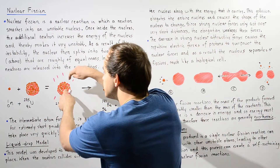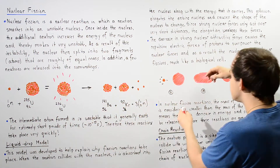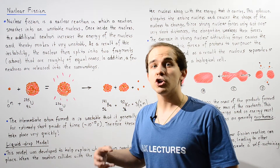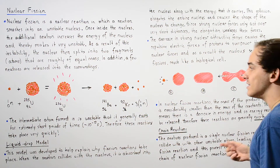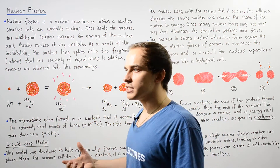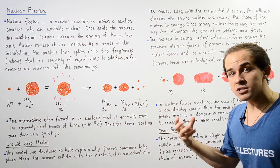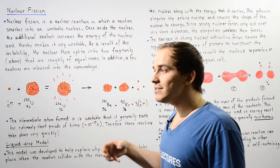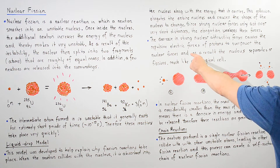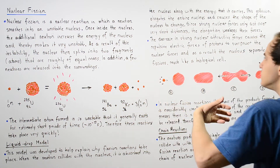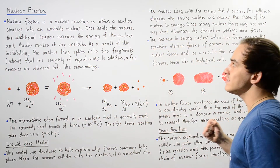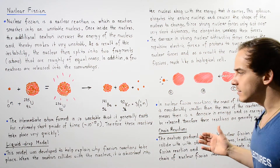as the distances between nucleons increase due to this elongation process — as shown in diagram B — there is a decrease in the strong nuclear attractive forces holding those nucleons in place. As a result of this decrease in attractive forces, the electrical repulsive forces between the protons increase and overpower the strong nuclear forces, causing the nucleus to separate or fission, in the same way that a biological cell fissions during reproduction.